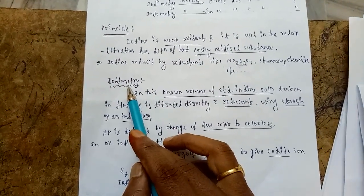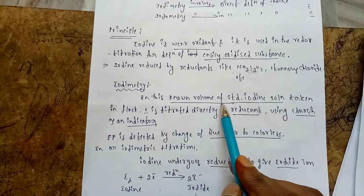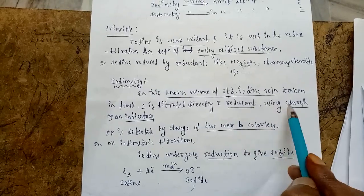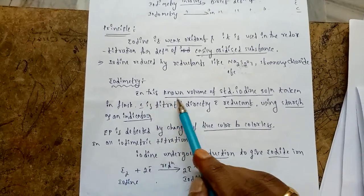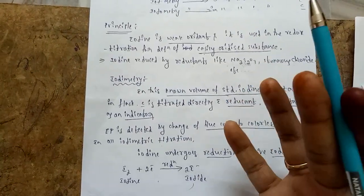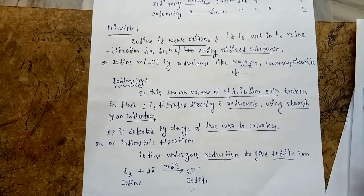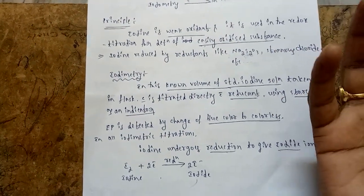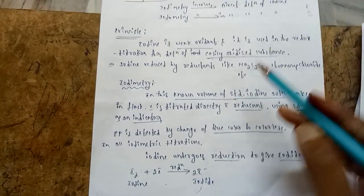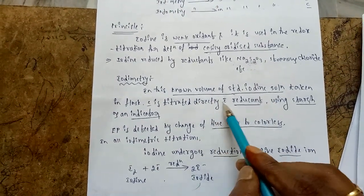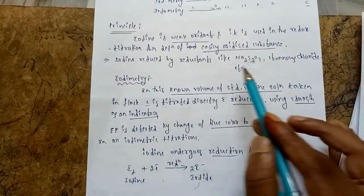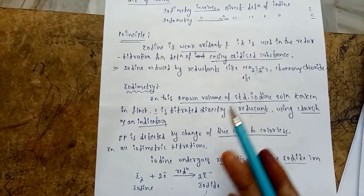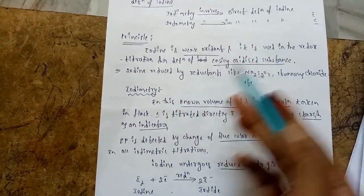What is the principle involved in iodimetry? In iodimetry, a known volume of standard iodine solution is taken in a flask, and it is titrated directly with a reductant using starch as an indicator. We take a known volume of standard iodine solution in the flask, add starch as an indicator, and this iodine solution is treated directly with reductant compounds — this is known as iodimetry, meaning direct determination.